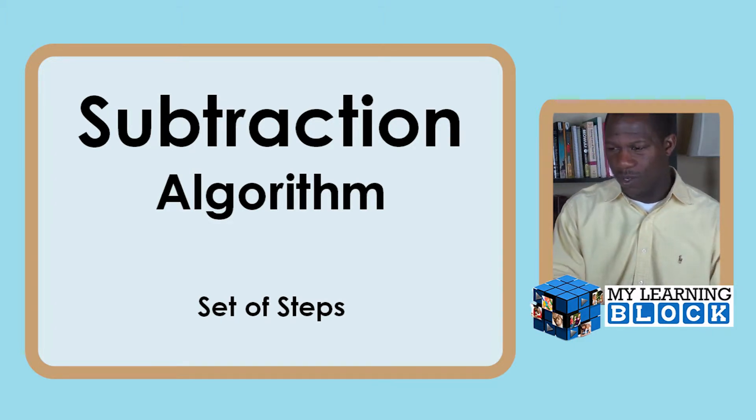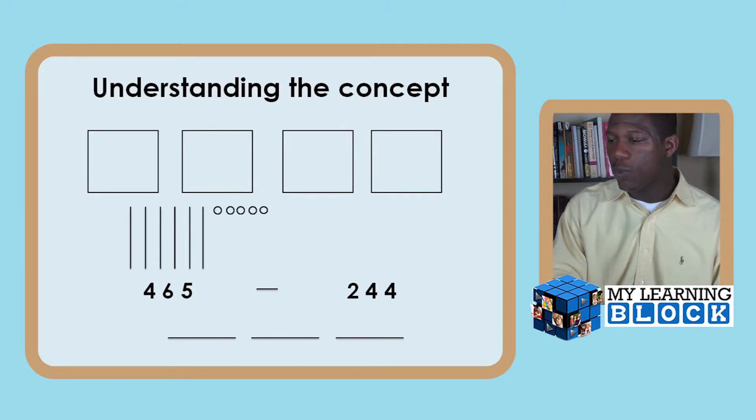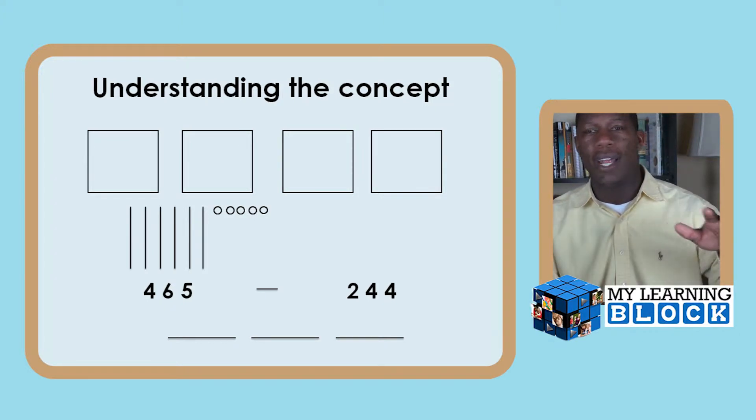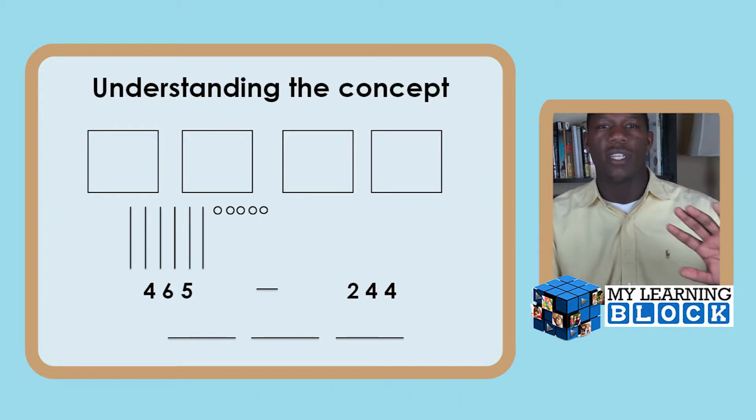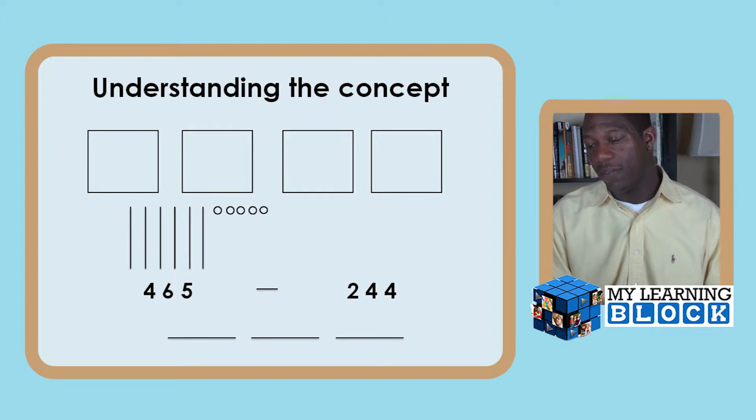Now again, because we are at this process, we've already gone over the whole idea of the concept. Your child is ready. They understand the concept of subtraction. They understand that they have 465 and they're going to take away 244.